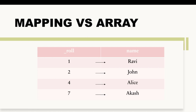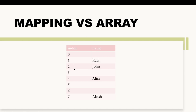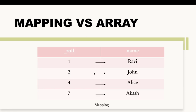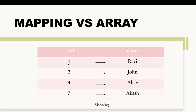If I want to do the same thing with an array, how will it look in memory? If I store the same data inside an array, it will look like this: at index one we have the name Ravi, at index two we have John, at four we have Alice, and at seven we have our last entry. One thing to notice is that with mapping there are no empty slots, while doing the same thing with an array results in a lot of empty slots.